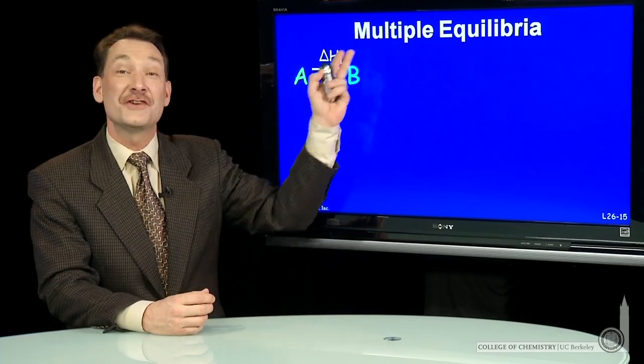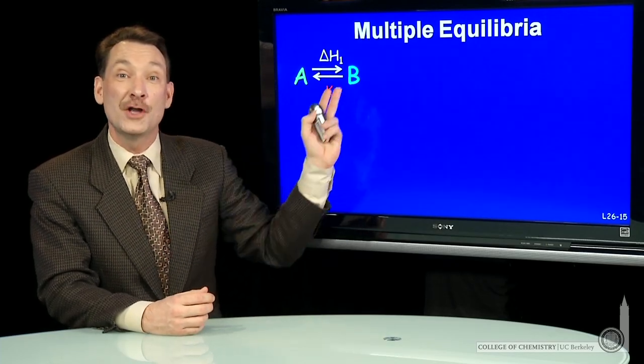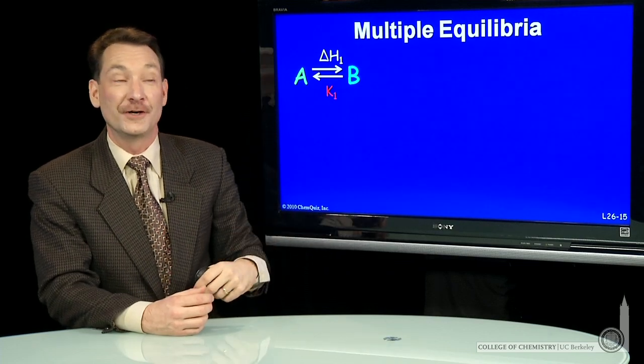Multiple equilibria occur when there's steps in the chemical reaction, or reactions can happen sequentially. For instance,